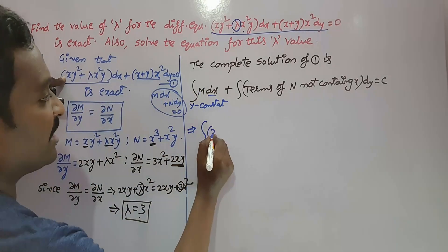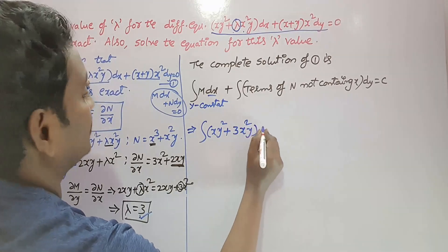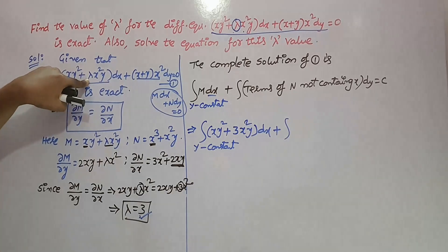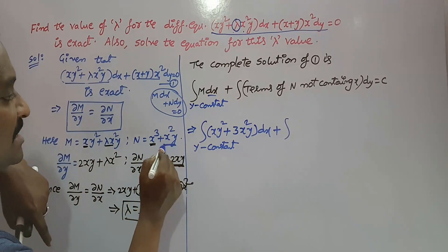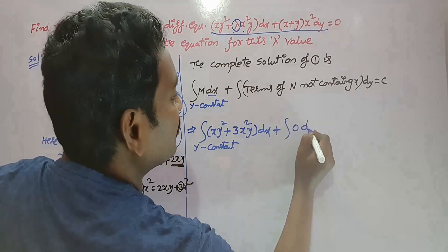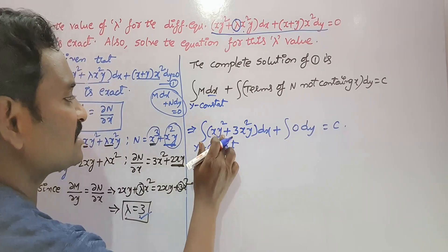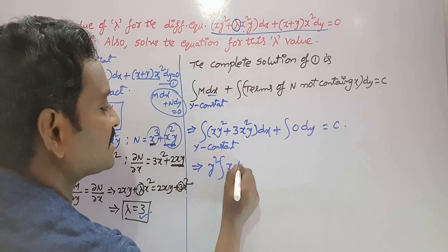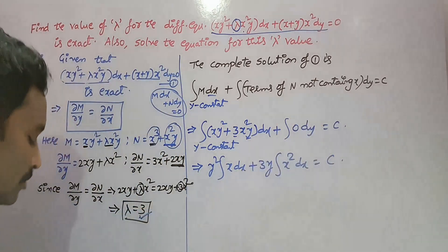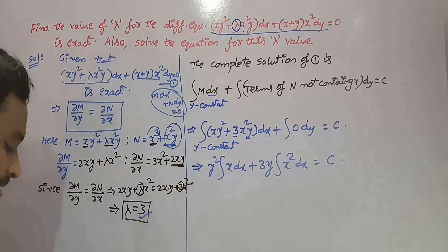Substituting M: integral of x y squared plus 3x squared y into dx, where y is constant. Then look at N — we have two parts: x cubed and x squared y, both contain x, so no terms from N are taken here; write 0. Separating: y squared is constant, so take it out — y squared times integral of x dx, plus 3y times integral of x squared dx, equals c.